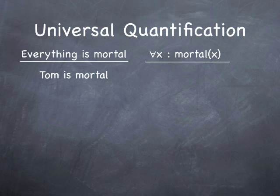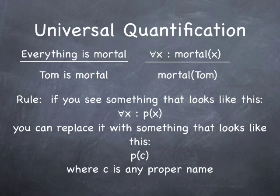Now to draw the conclusion that Tom is mortal, what we do is we take the x and replace it by Tom, and then we drop the 'for all x such that' in front of it. Very simple. You just take the variable, replace it by any proper name that you want, and drop the existential quantifier. In summary, it's like this: if you see something that looks like this, for all x such that P of x, you can replace it with something that looks like this: P of C, where C is any proper name.